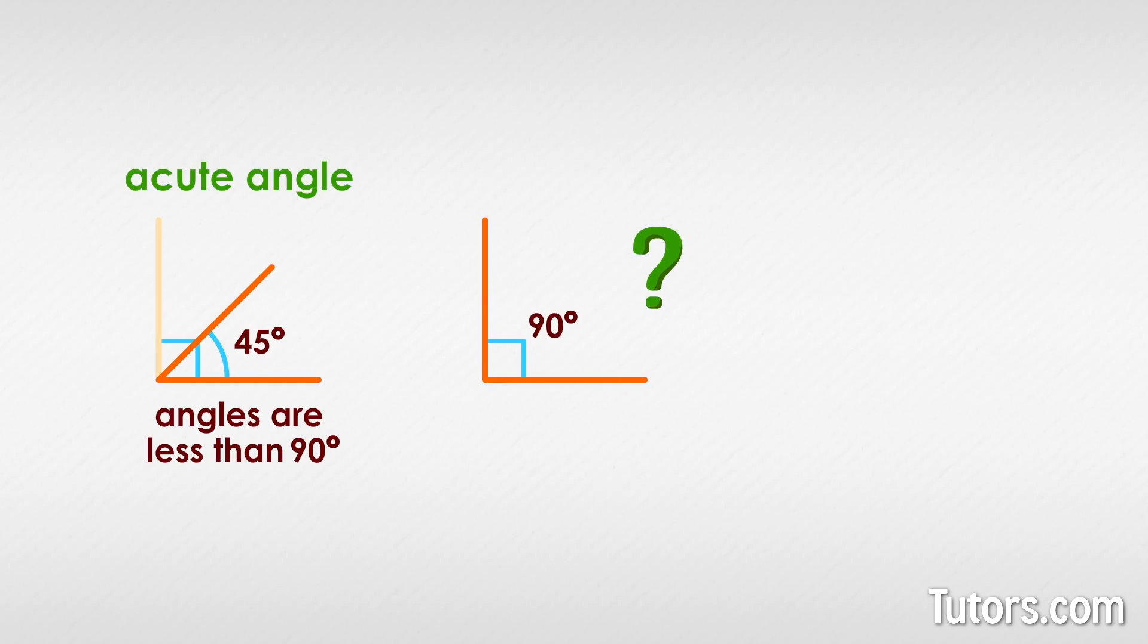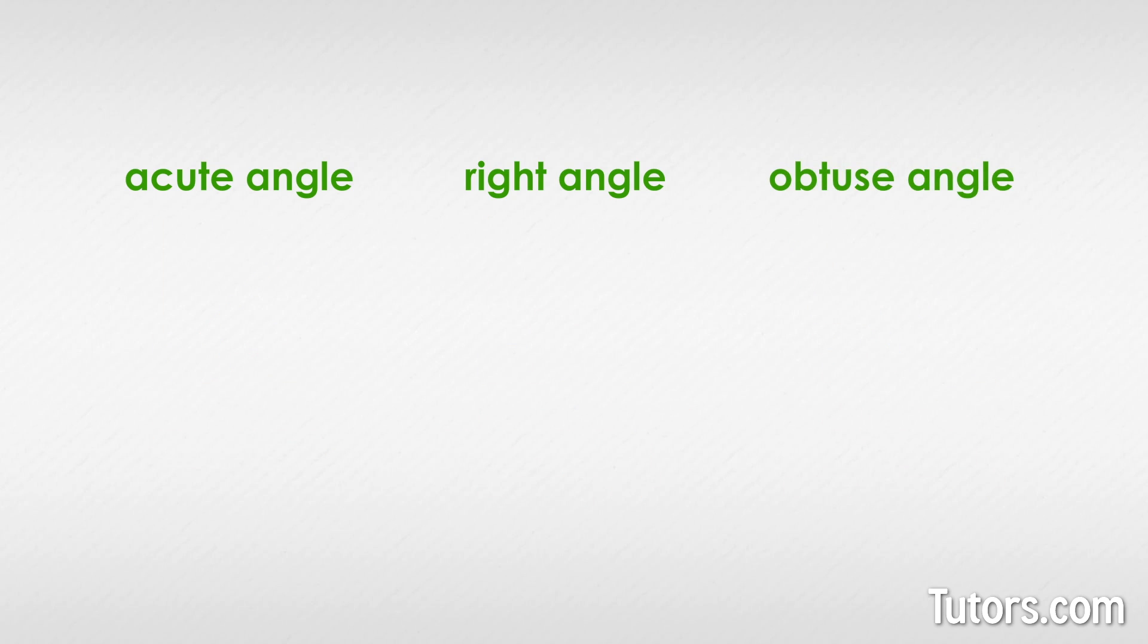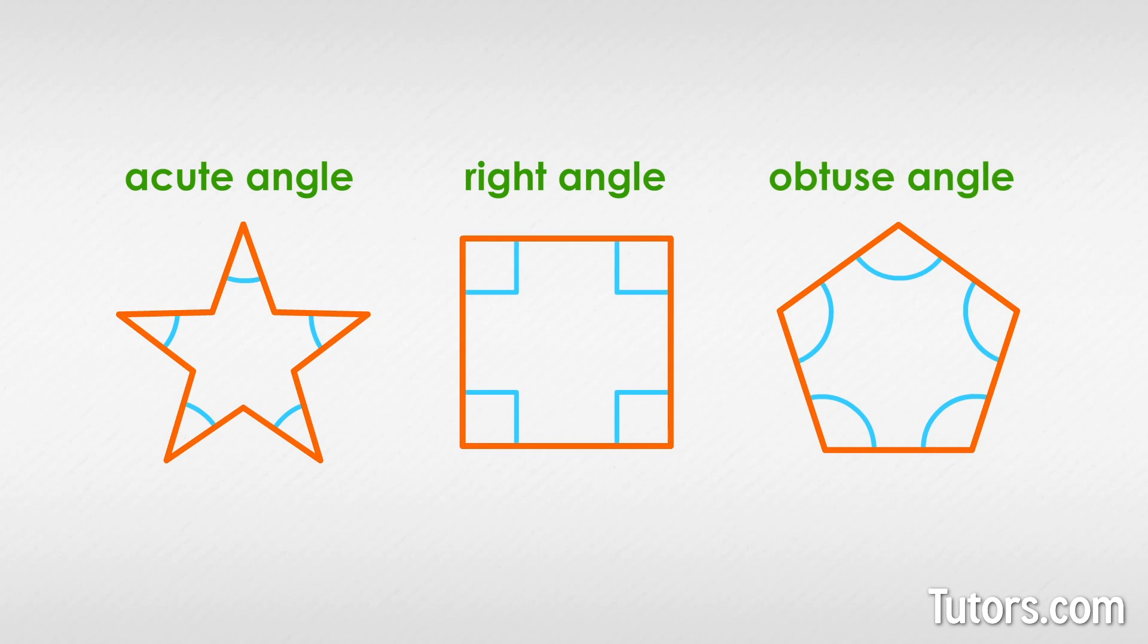If acute angles are angles less than 90 degrees, what is an angle called if it is 90 degrees exactly, and what if an angle measures more than 90 degrees? A right angle is an angle whose measure is exactly 90 degrees. An angle measuring more than 90 degrees is called an obtuse angle. Here are examples of what acute, obtuse, and right angles can look like.